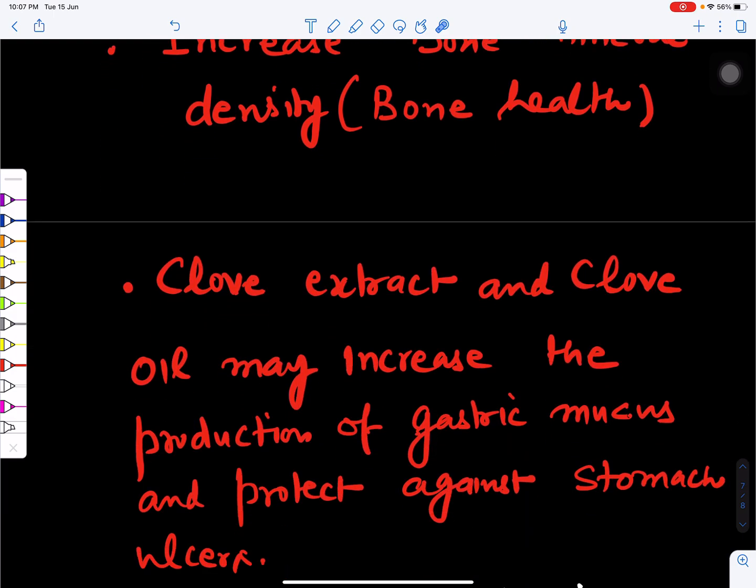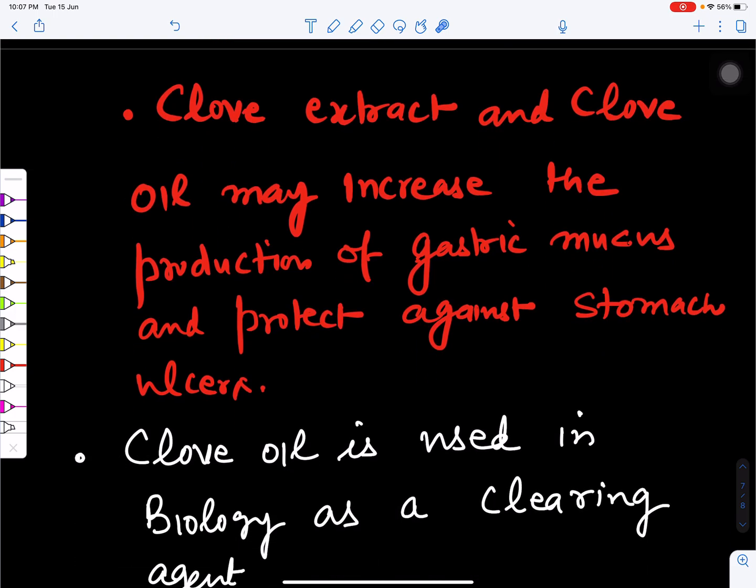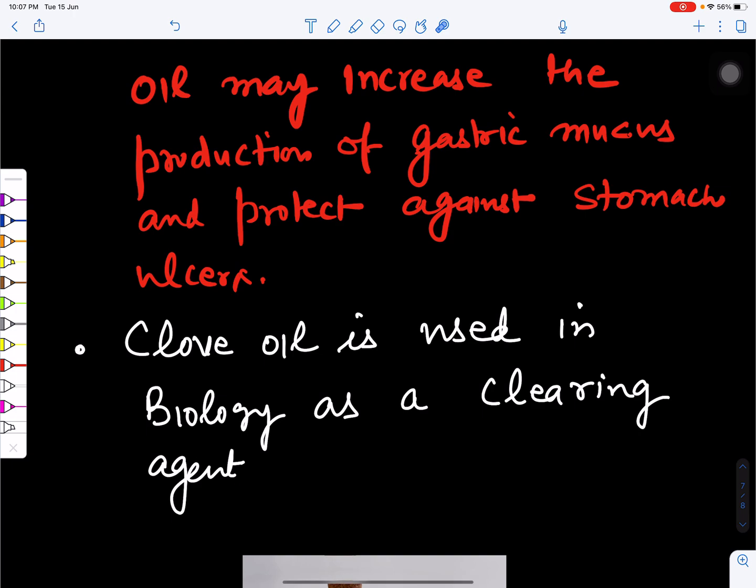Clove extract and clove oil may increase the production of gastric mucus and protect against stomach ulcers. Ulcer formation in the stomach can be treated with clove oil.